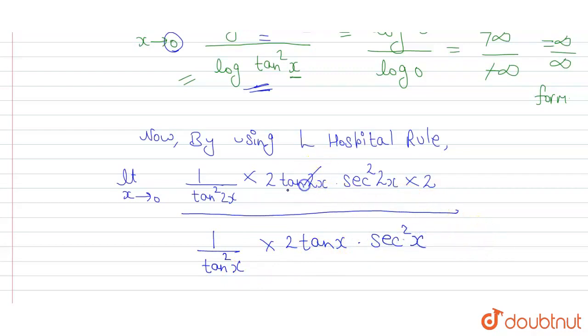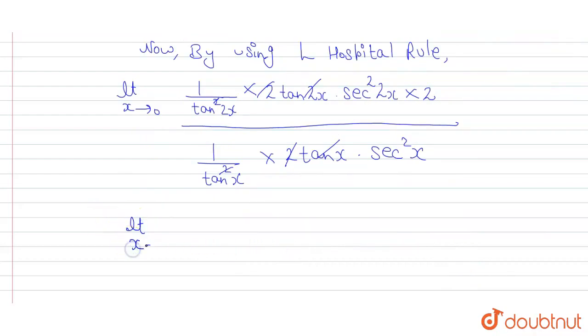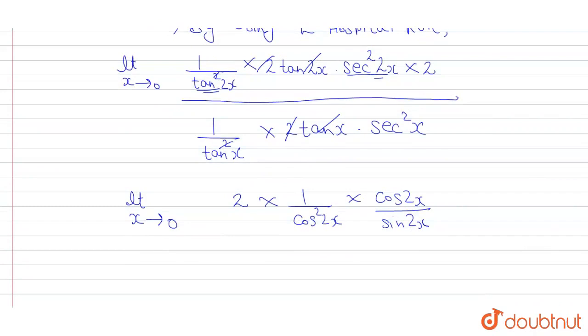Now tan 2x cancel out and tan x cancel. The 2s cancel. We are left with limit x tends to 0, sec square 2x is 1 upon cos square 2x, and tan 2x is sin x upon cos x, so the reciprocal is cos 2x upon sin 2x.